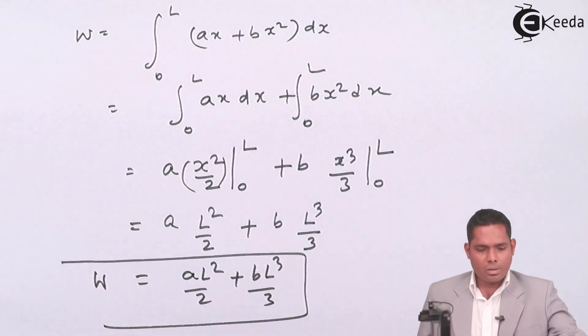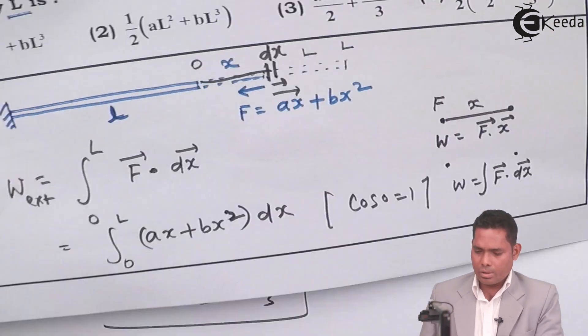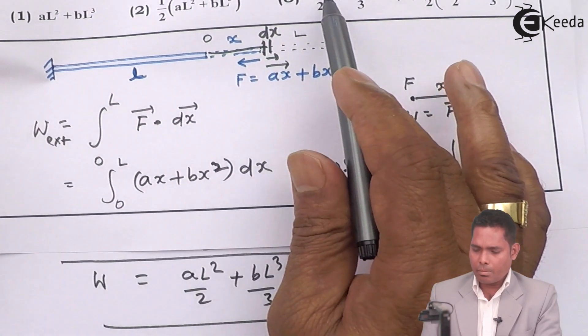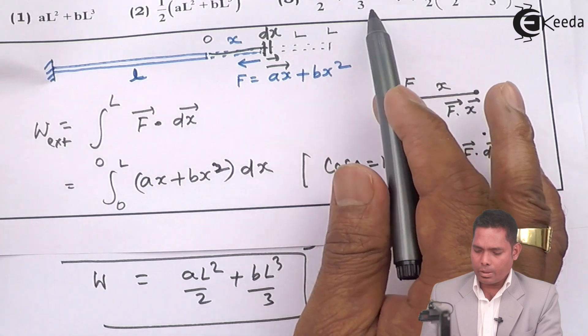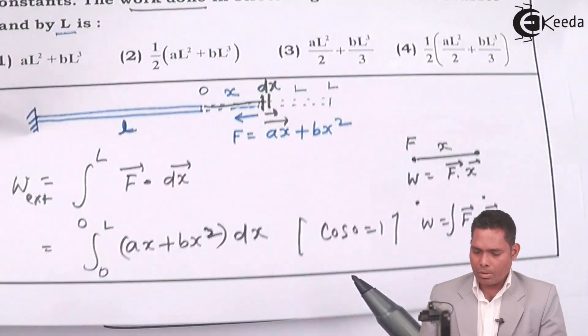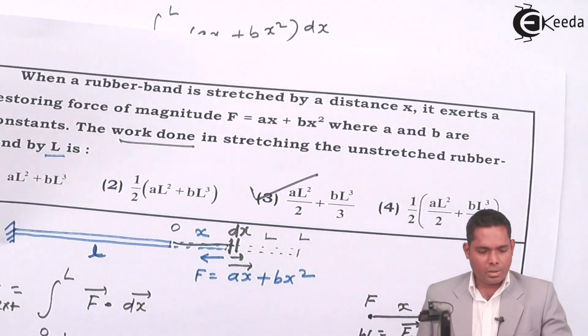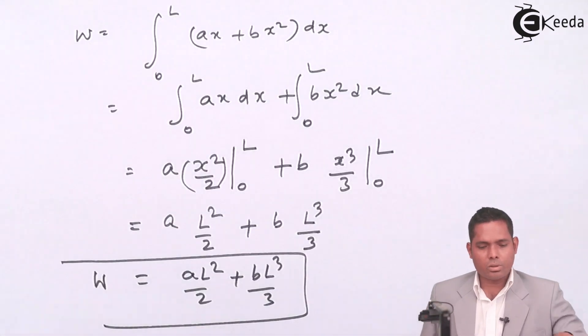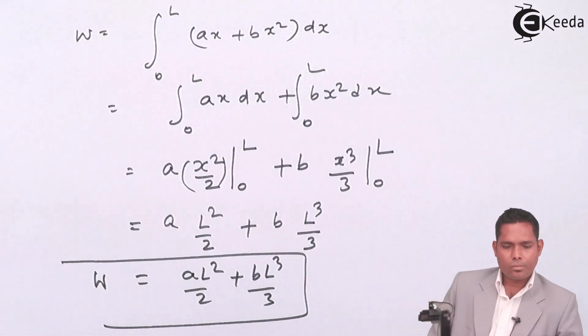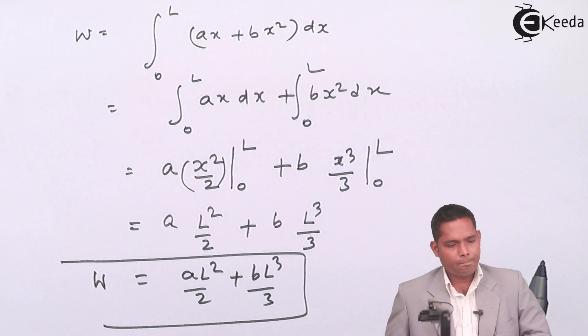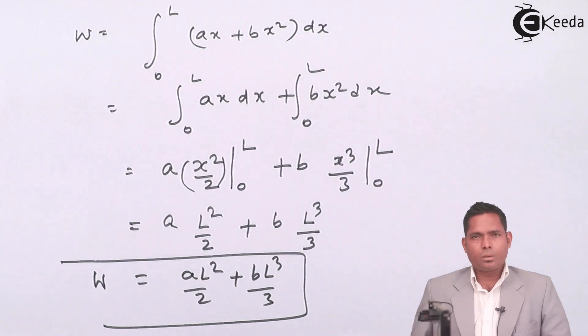So the answer is aL squared by 2 plus bL cubed by 3. If I see the options, it is aL squared by 2 plus bL cubed by 3, so option number 3 is the correct answer to this question. Thank you.